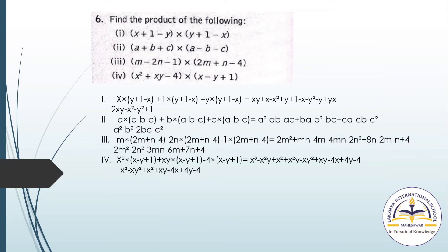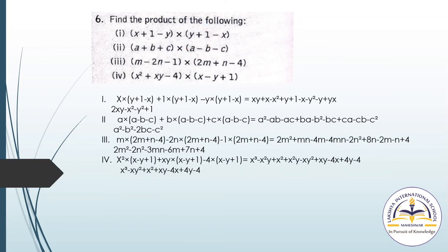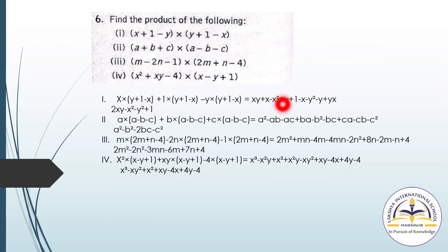Question number 6: In the same manner, multiply x into the complete term (y plus 1 minus x), then 1 into (y plus 1 minus x), then minus y into (y plus 1 minus x). This gives: xy plus x minus x², then y plus 1 minus x, then minus y² minus y plus yx. Collect all like terms to get the final answer.